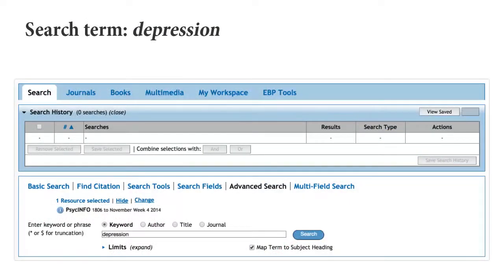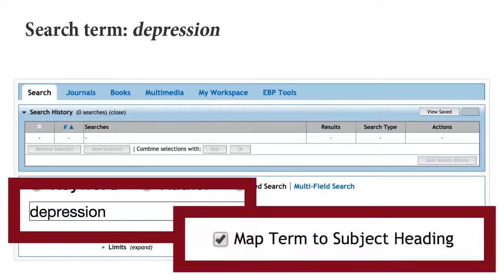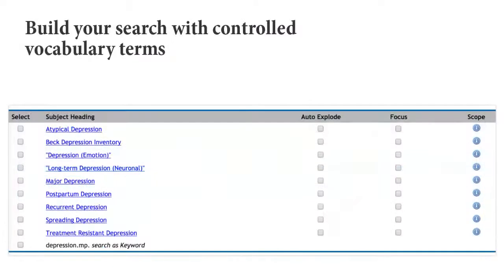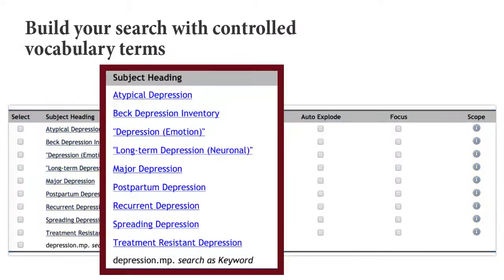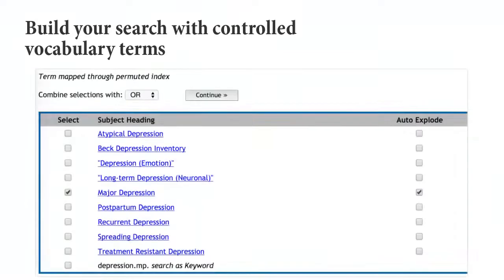Let's enter our first term, depression, into the search box. Make sure to select the map term to subject heading box, then select search. Notice that depression gives us a long list of types of depression, including depression emotion and major depression. Most of the terms listed are controlled vocabulary terms. Let's choose major depression and also select the auto-explode box, where we can automatically search most of the other kinds of depression as well.